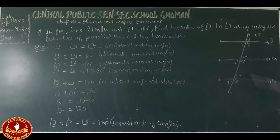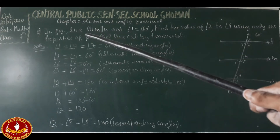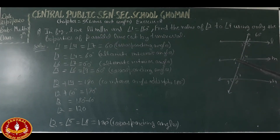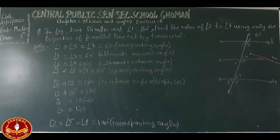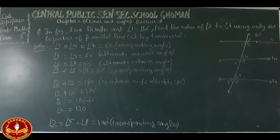Now for question 8. In the figure, line L is parallel to M, which is parallel to N — three parallel lines. The angles are numbered one through nine. Angle one is given as 60 degrees, and we need to find all the remaining angles.